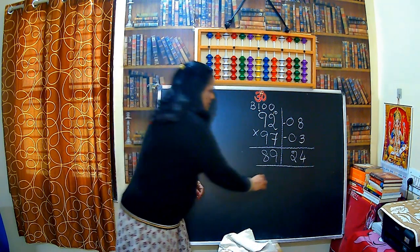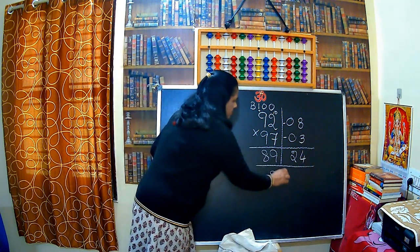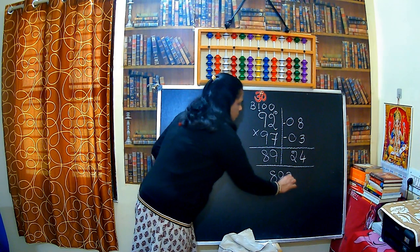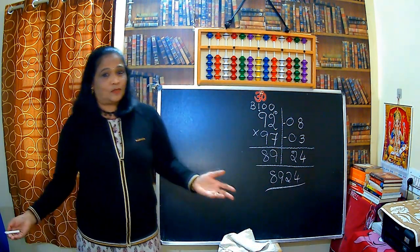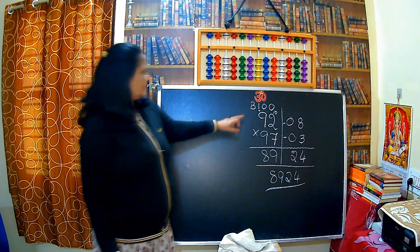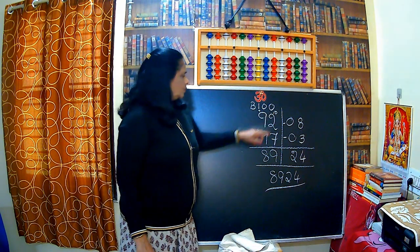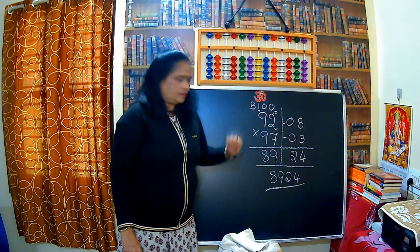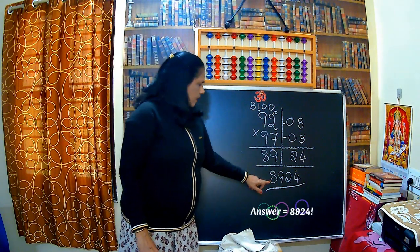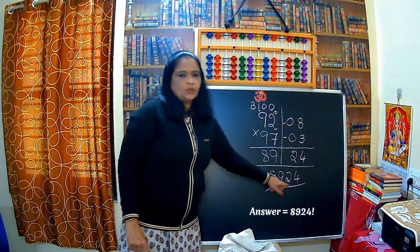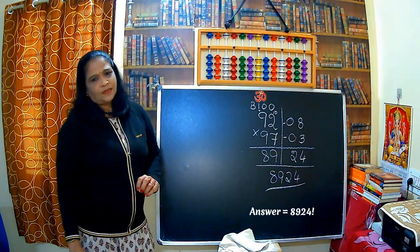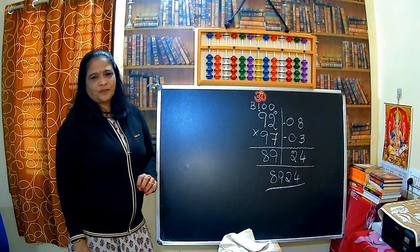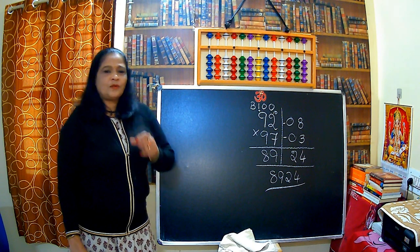So the answer is 8924. That's all. 92 multiplied by 97 is 8924. This is how to multiply two-digit numbers.